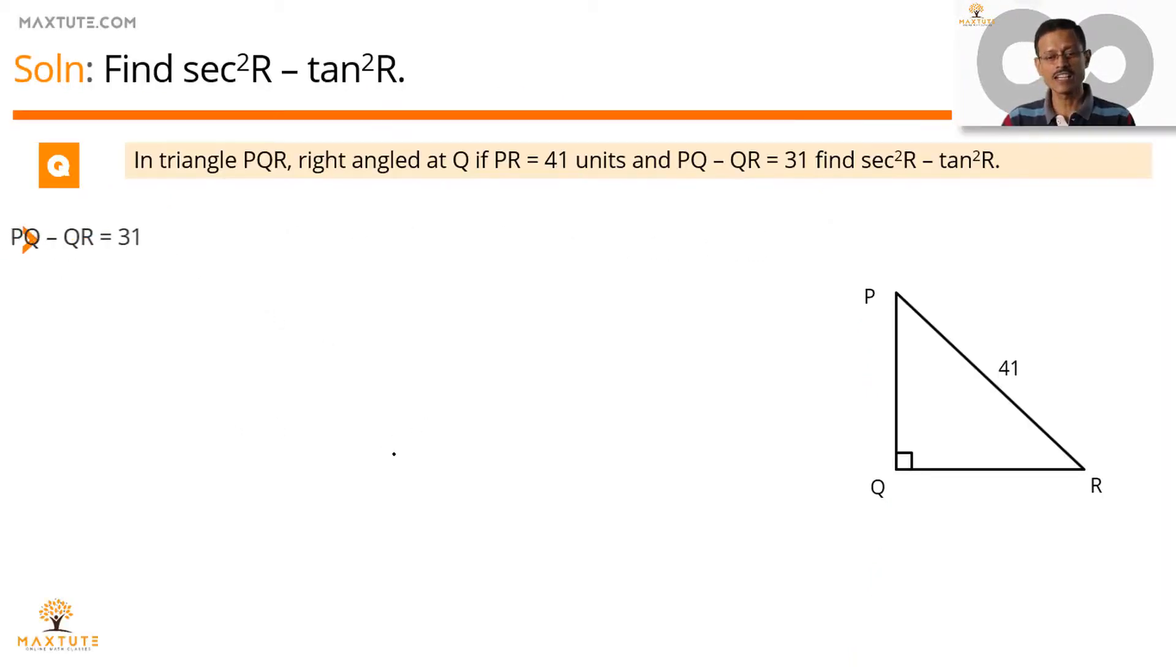Let's get started by drawing this right triangle PQR, right-angled at Q. PR measures 41, which is the hypotenuse. What information do we have about the other two sides? PQ minus QR equals 31. So we can say PQ equals QR plus 31.